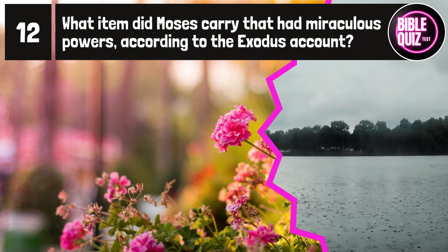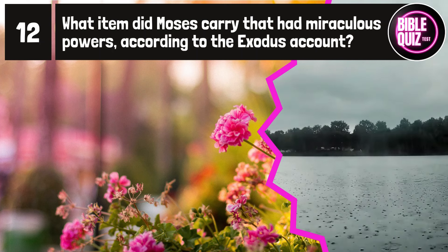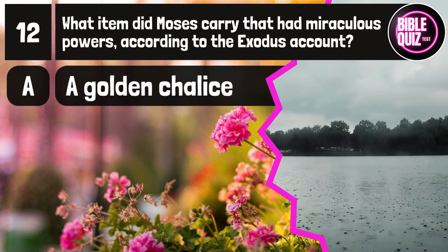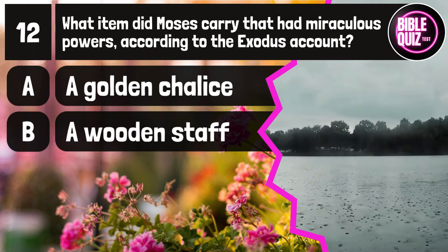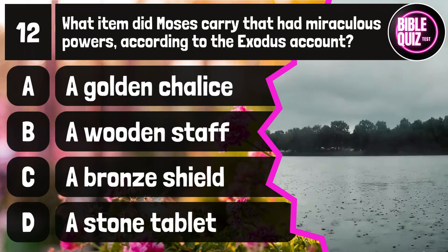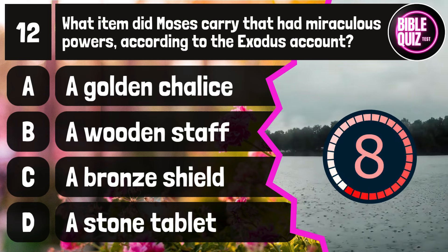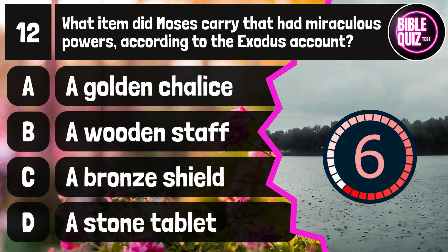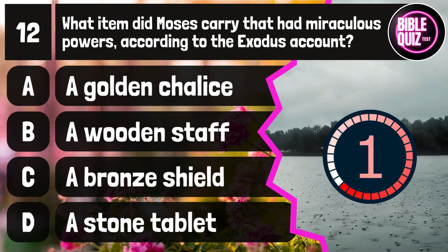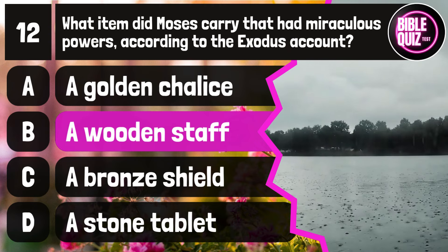Question number 12. What item did Moses carry that had miraculous powers according to the Exodus account? Option A: A golden chalice. Option B: A wooden staff. Option C: A bronze shield. Option D: A stone tablet. Time to think. The answer is option B: A wooden staff.